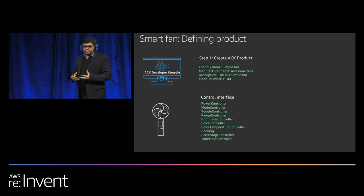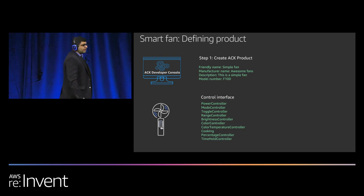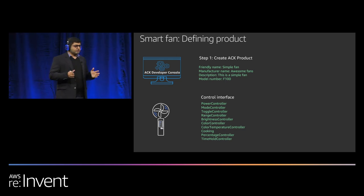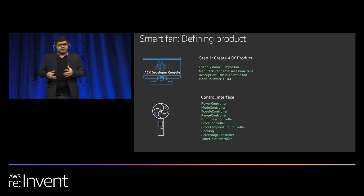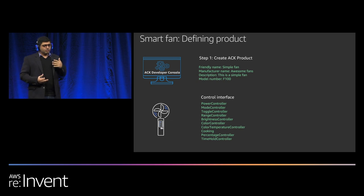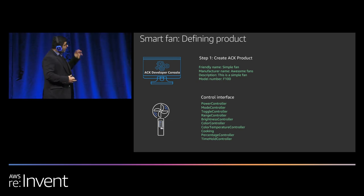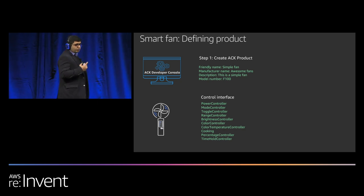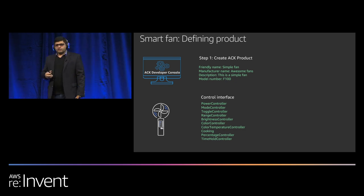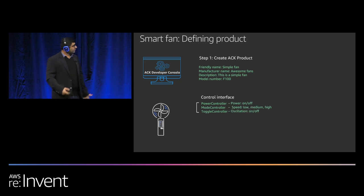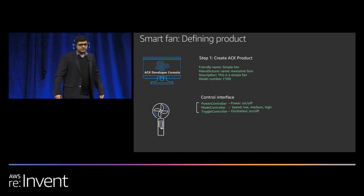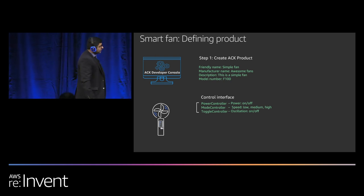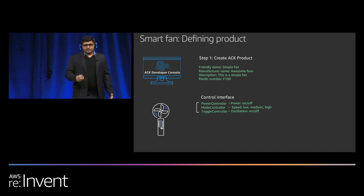Some controllers are simple, like power controller. Some are complex, like cooking. If you look at the microwave or crock pot launched by Amazon, they are based primarily on the cooking experience — you can say cook two pounds of chicken. Some controllers have one instance, some can have multiple instances. For my fan example, I pick three controllers: power for on and off, mode controller for low, medium, and high speeds, and toggle controller for rotation on and off.